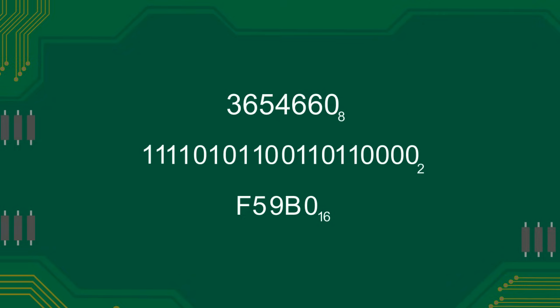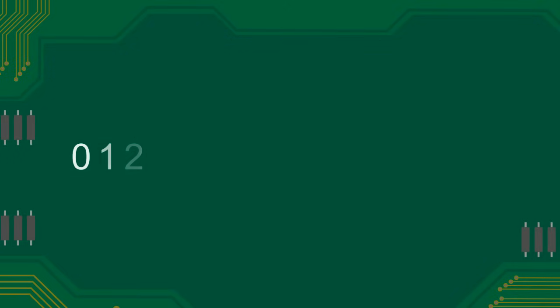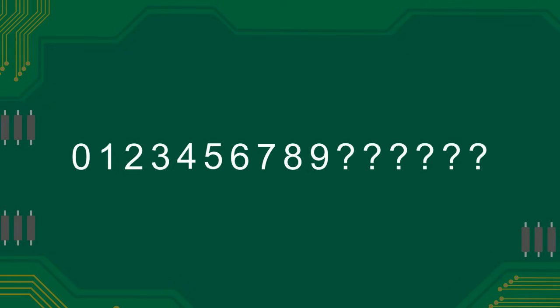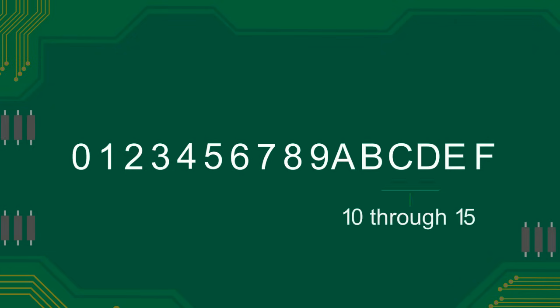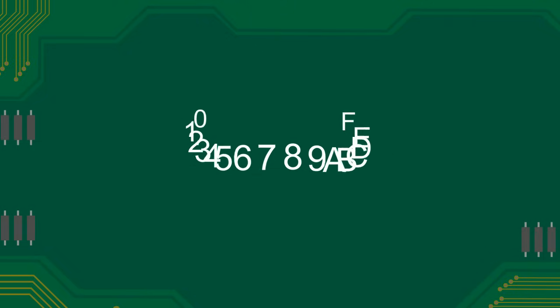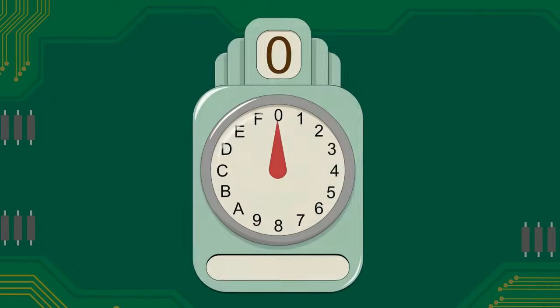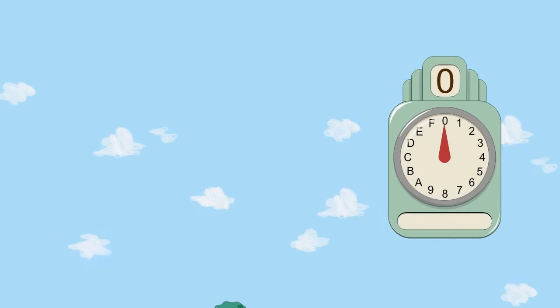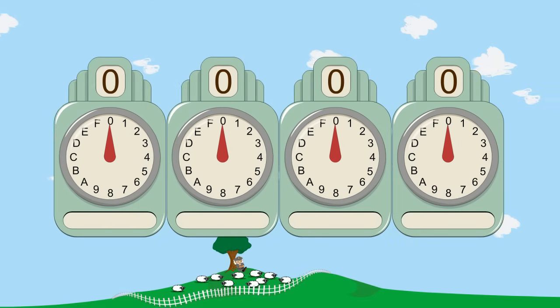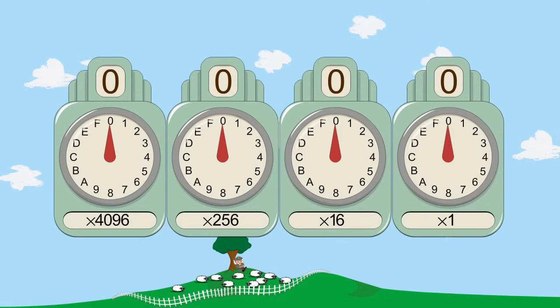Hexadecimal numbers use sixteen numeric symbols. The symbols zero through nine are used just as in decimal, but six more symbols are needed. Instead of making up new symbols, the letters A through F are used to represent what we call ten through fifteen in decimal. Counting in hexadecimal works the same way as in decimal or octal, except that hex uses sixteen symbols per digit. Because each column multiplier is sixteen times larger than the previous column, hexadecimal can represent large numbers with fewer digits than octal or decimal.